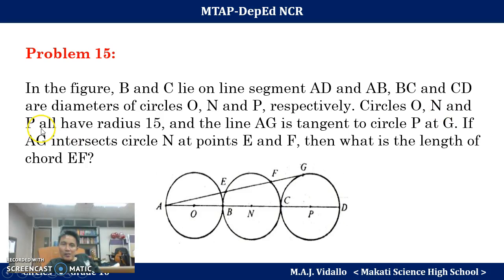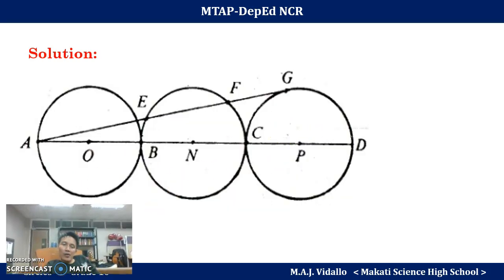Circles O, N, and P all have radius 15 and the line AG is tangent to circle P at G. If AG intersects circle N at points E and F, then what is the length of the chord EF? Let's enlarge this illustration.